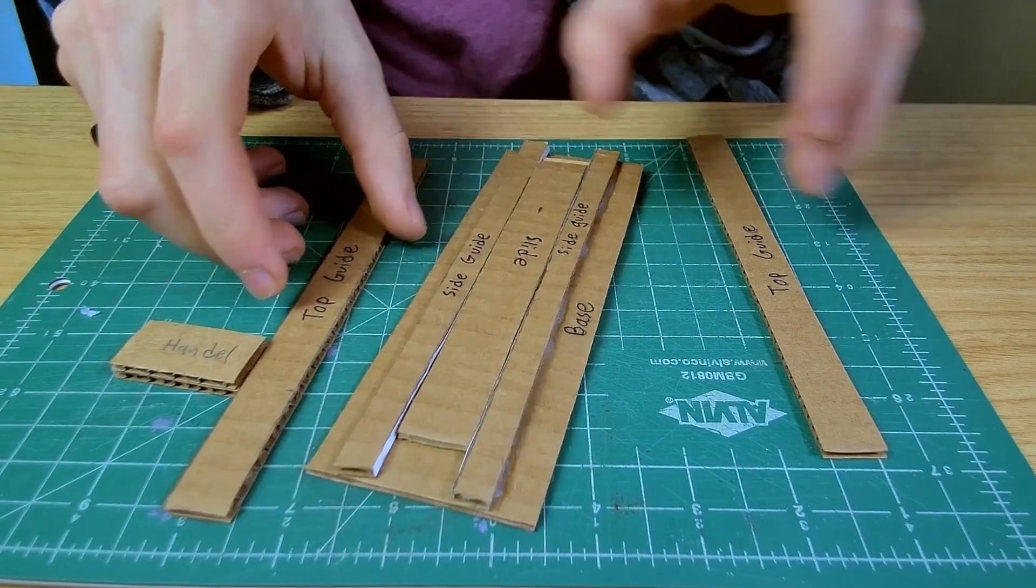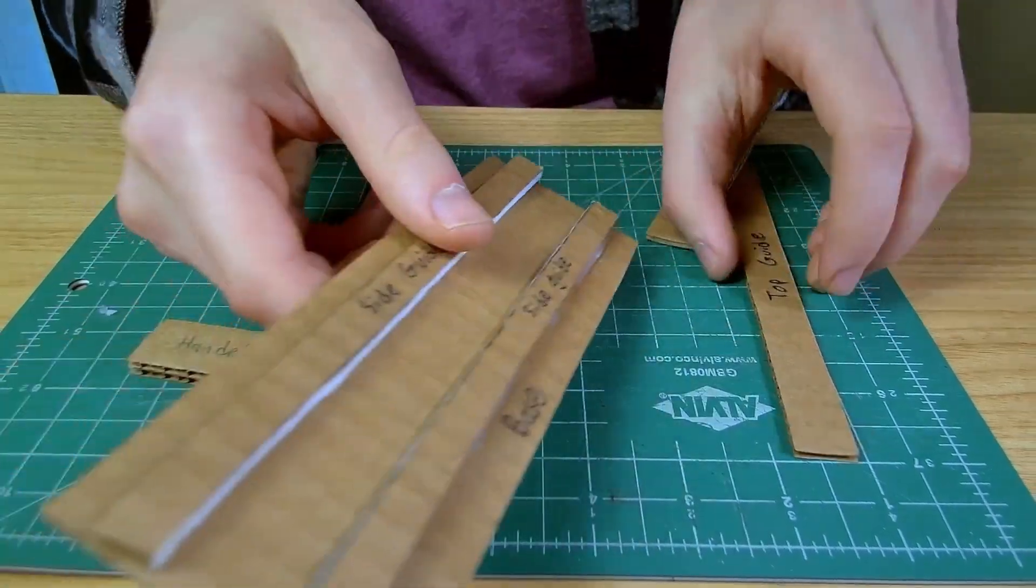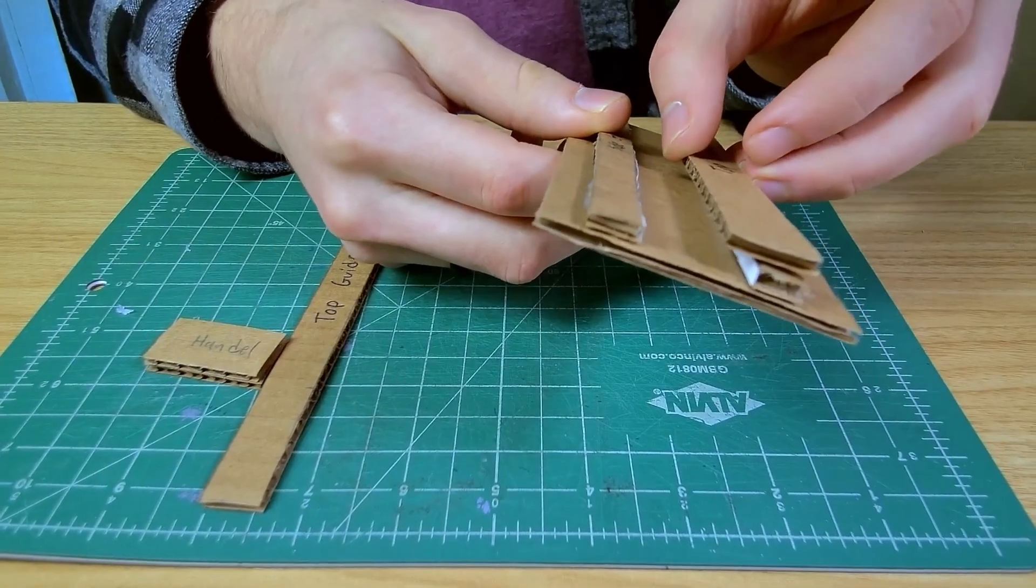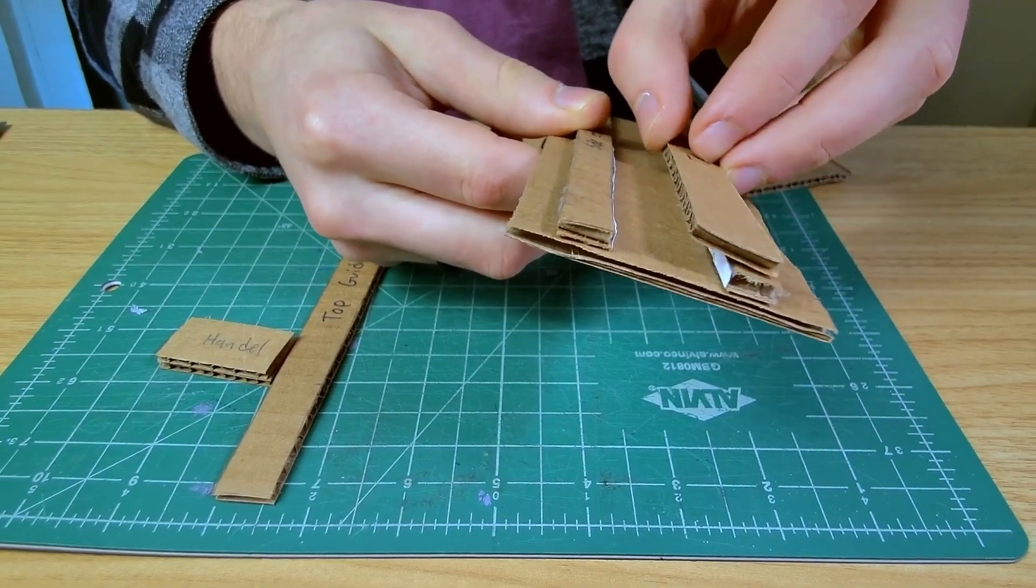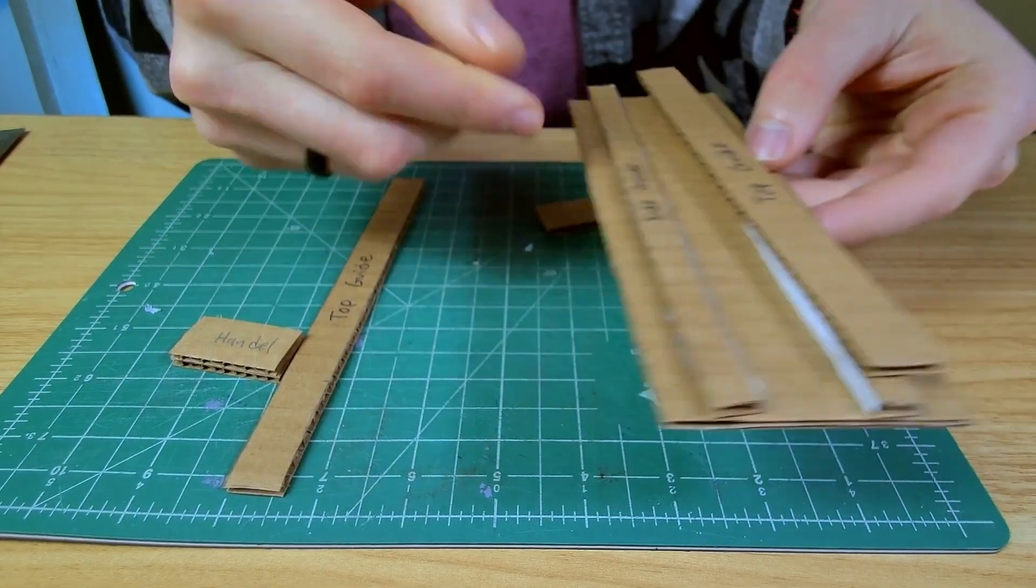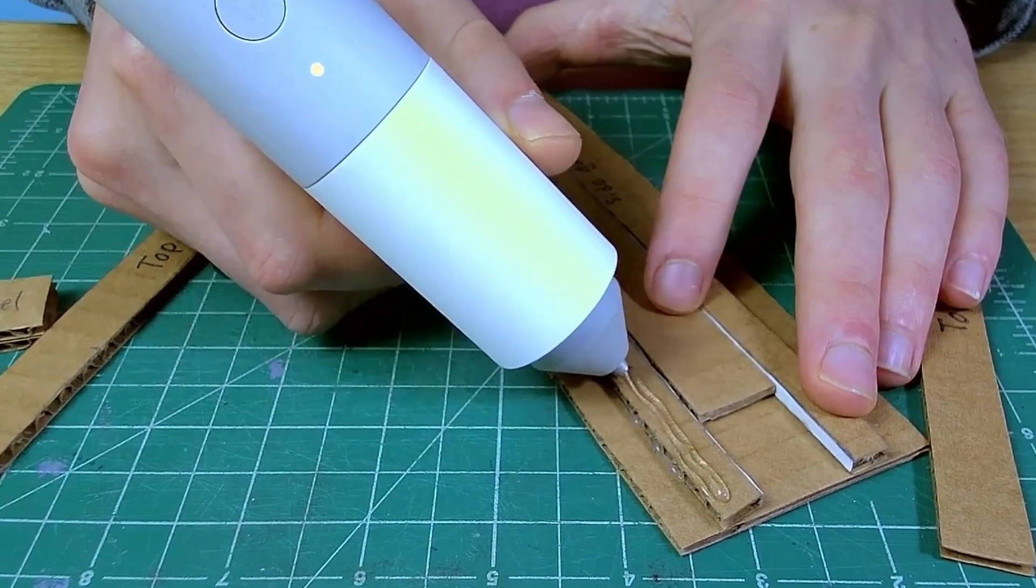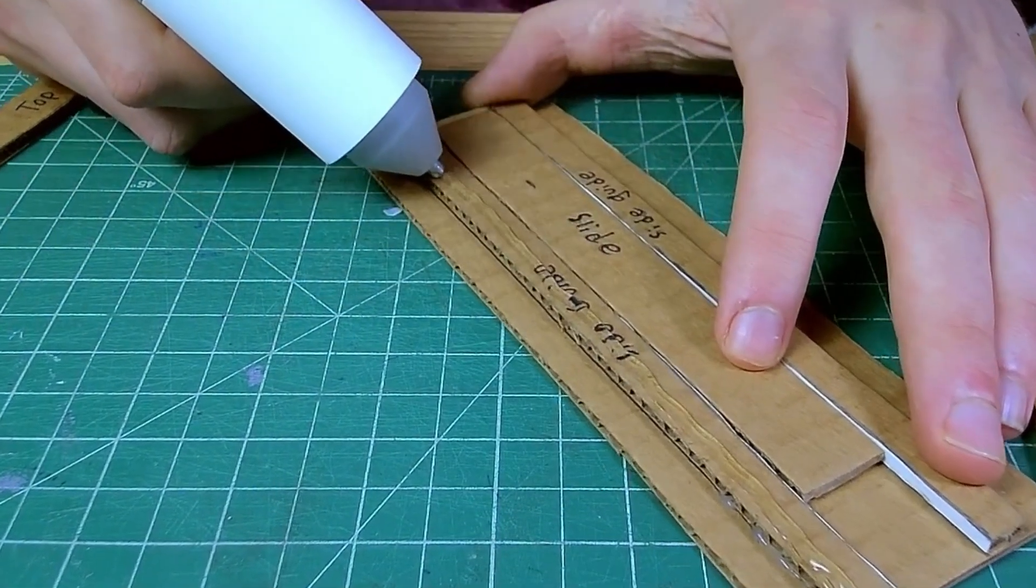I'm going to keep the slider in here when I glue the top guides on so that I don't accidentally glue them on with a downward tilt or an upward tilt that would affect the tension inside of it. This just means I have to be a little extra careful not to get glue on the inside.